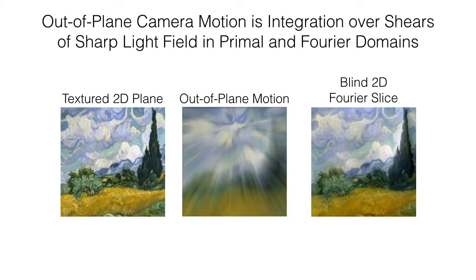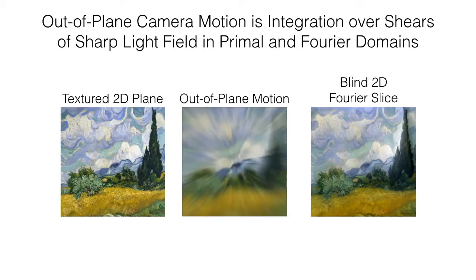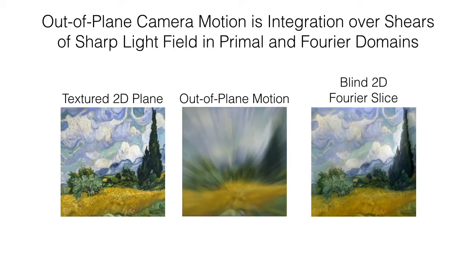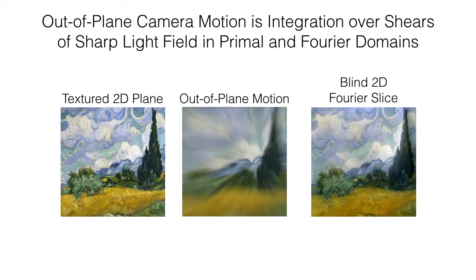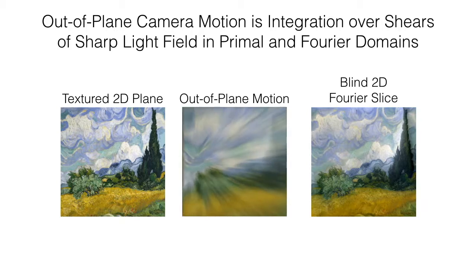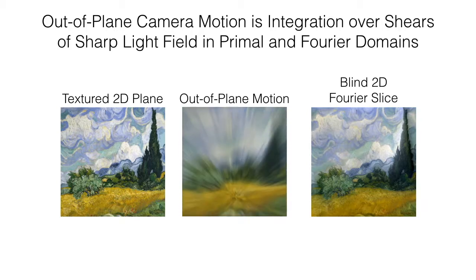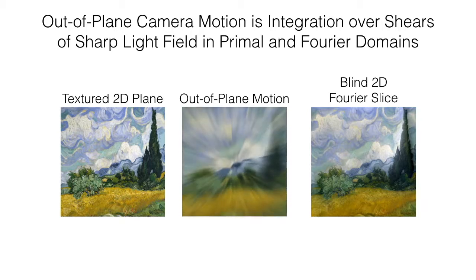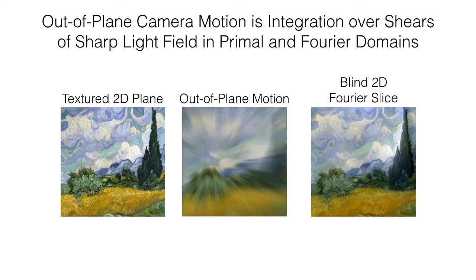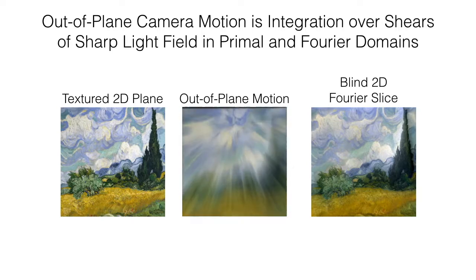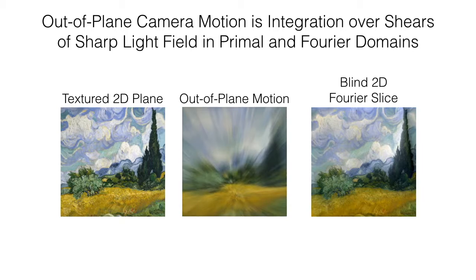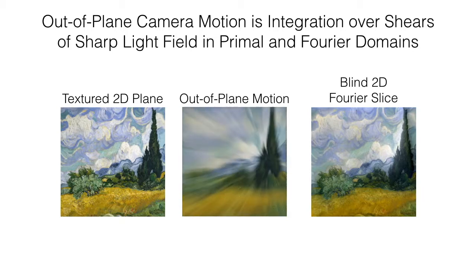Next, we show that a light field blurred with out-of-plane camera motion is an integral over shears of the sharp light field. Therefore, we can blindly de-blur a light field of a textured plane captured with out-of-plane camera motion by modulating a 2D slice of the 4D Fourier spectrum of the motion-blurred light field.